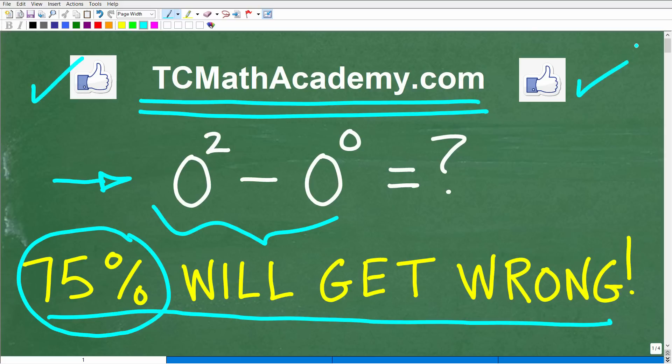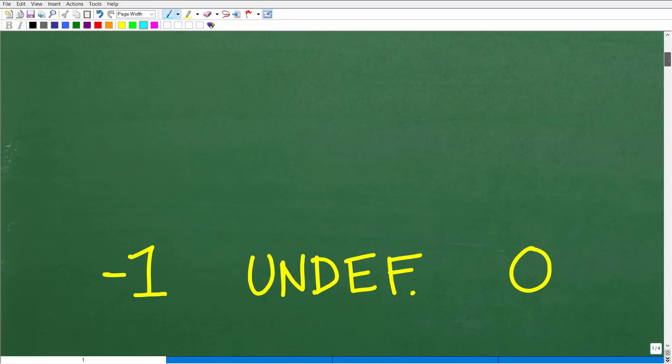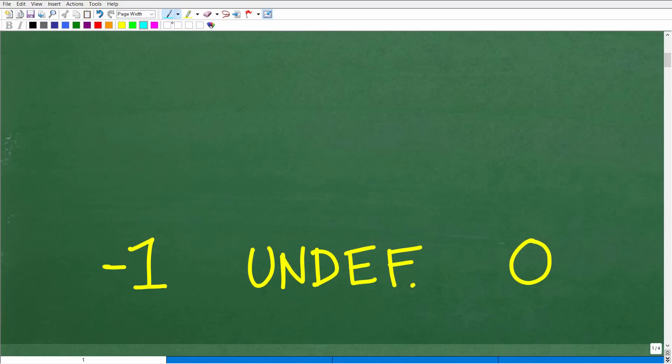Okay, so 0 squared minus 0 to the 0 power. What is this equal to? Again, put your calculators away. Let's go ahead and take a look at the answer. And just to make this more interesting, I have three answers here, and one or more of these answers are correct. Okay, so here is one answer. We have negative 1. Another answer is undefined. Okay, that's what this stands for. And then another one is 0.